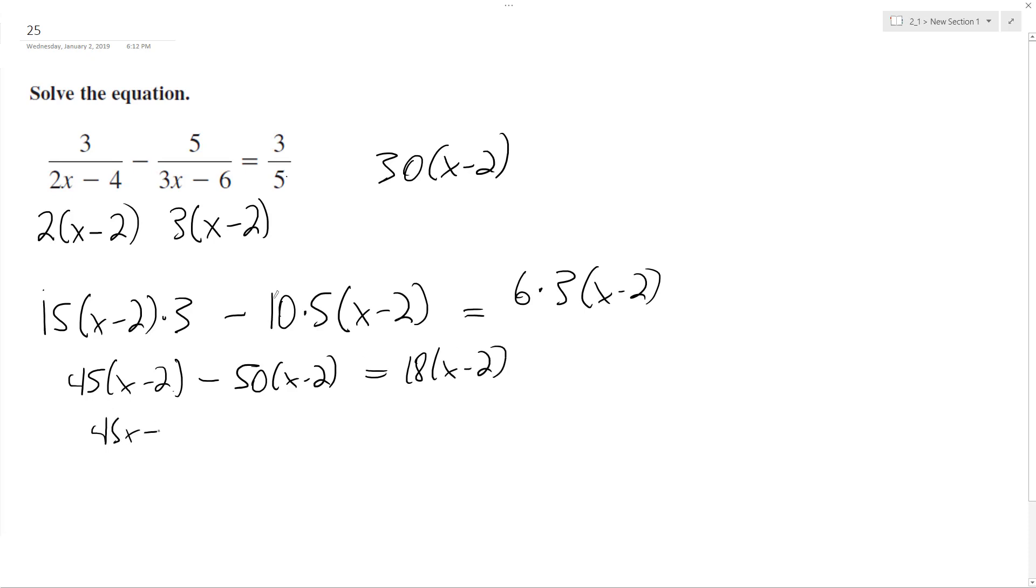45x minus 90 minus 50x plus 100, because the negative 50 times negative 2, equals 18x minus 36.